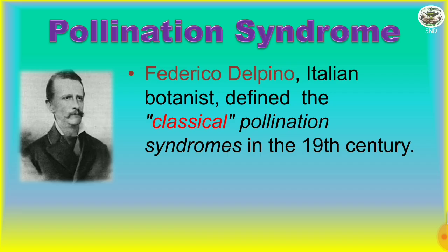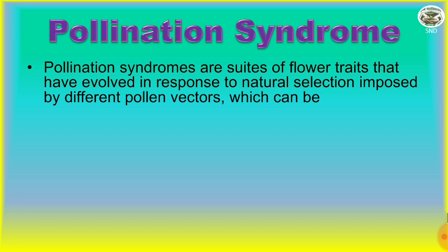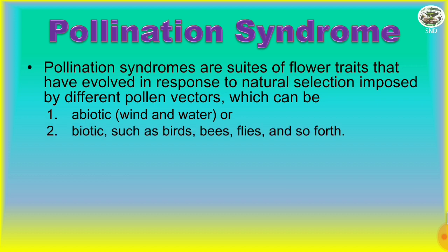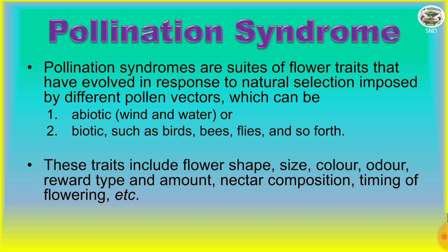Federico del Pino, the Italian botanist, defined the classical pollination syndromes in the 19th century. Pollination syndromes are the suites of flower traits that have evolved in response to natural selection imposed by different pollen vectors, which can be abiotic — by wind and water — or biotic, such as birds, bees, flies, and so forth.